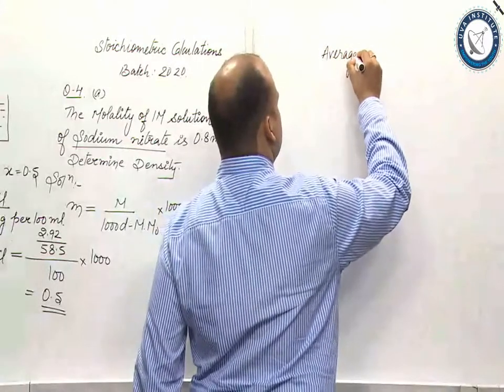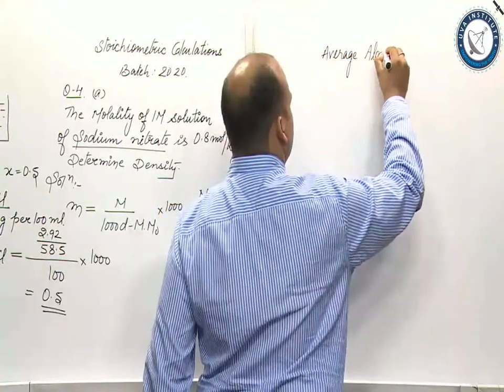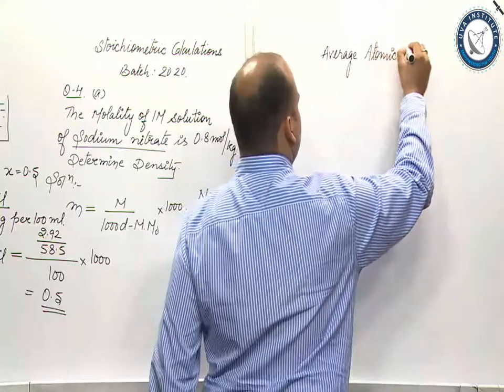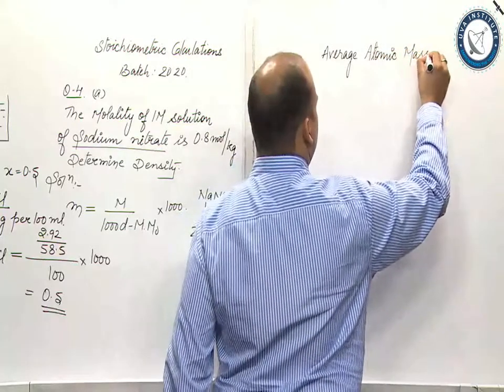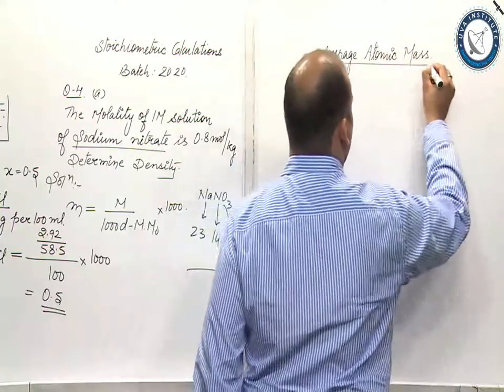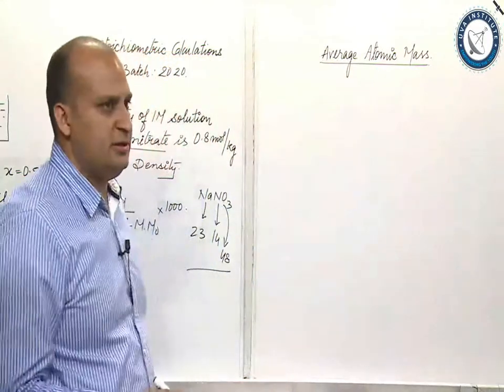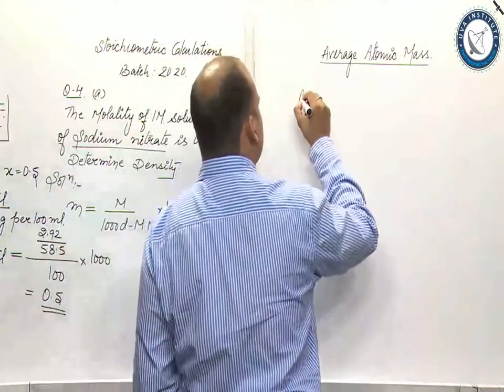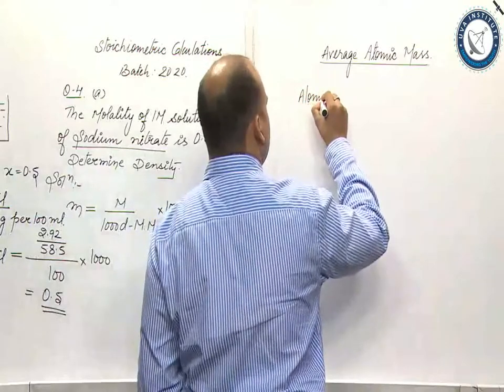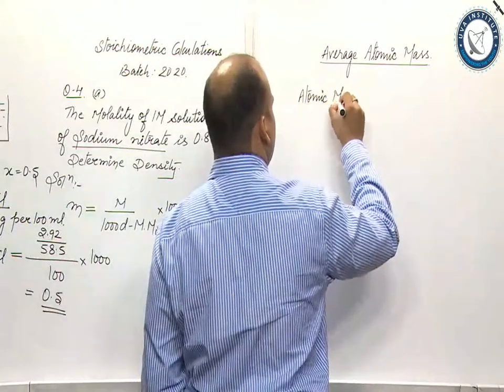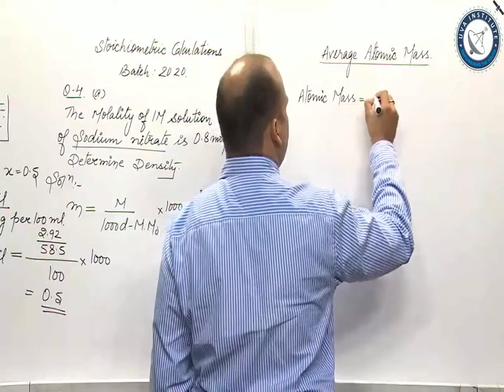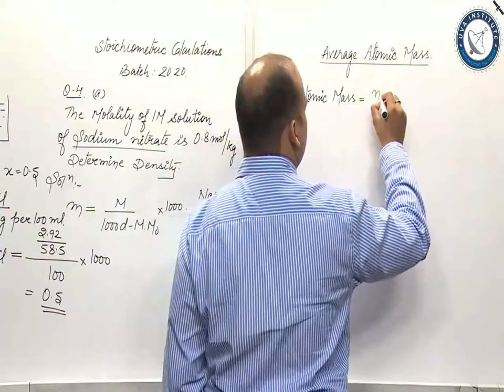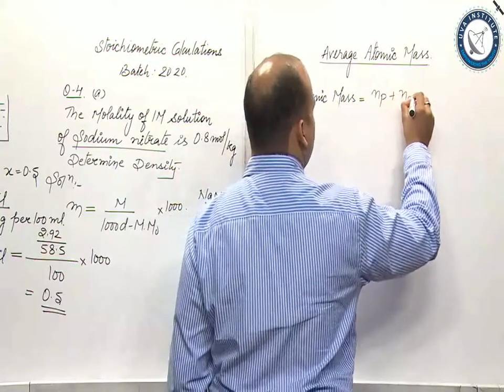Average atomic mass. What is the concept with mass? See, we say that atomic mass is equal to number of protons plus number of neutrons.